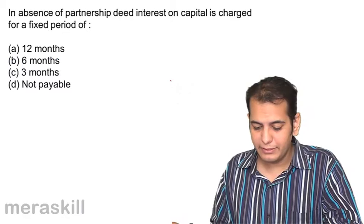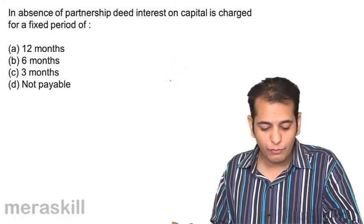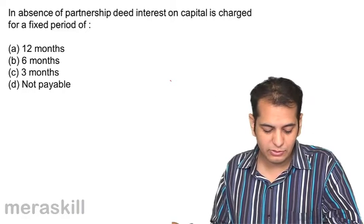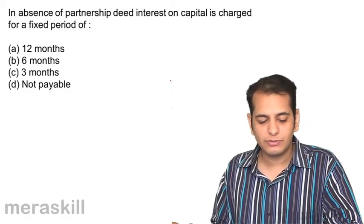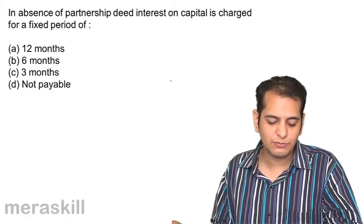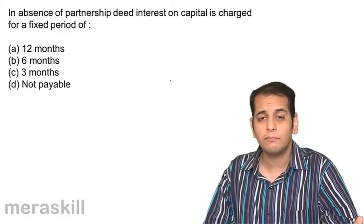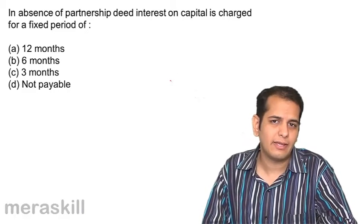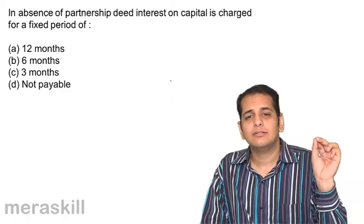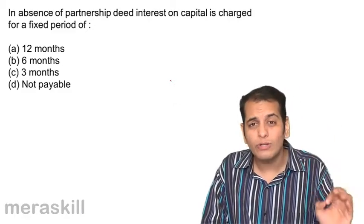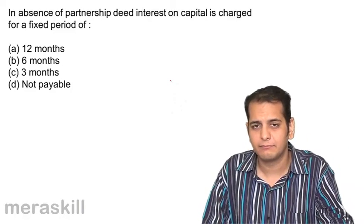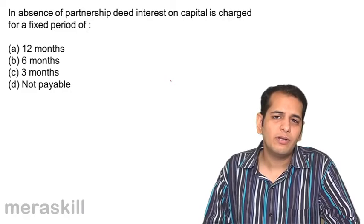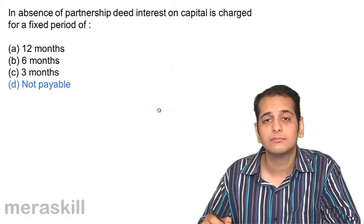In the absence of a partnership deed, interest on capital is charged for a fixed period of: a) 12 months, b) 6 months, c) 3 months, d) not payable. If there is no partnership deed, interest on capital is not payable — interest is a right of partners only if it is mentioned in the partnership deed.